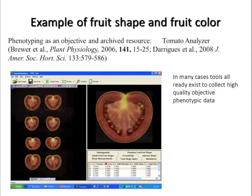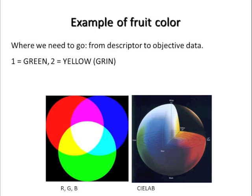In the case of tomato fruit shape and fruit color, Esther Vandernap's group has developed the tomato analyzer software, which works off of scanned images and can collect highly objective data that can be used to look at attributes of size, shape, and color. It turns out that these attributes can then be overlaid very nicely with the UPOC descriptors — you can quantitatively show that of the eight original classes, seven of them are quite robust statistically.